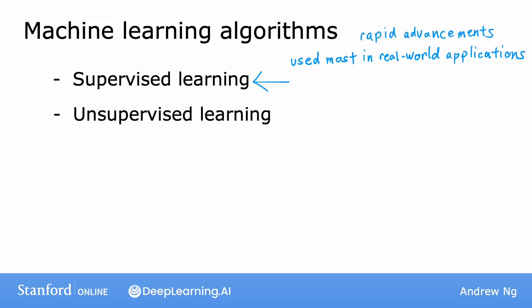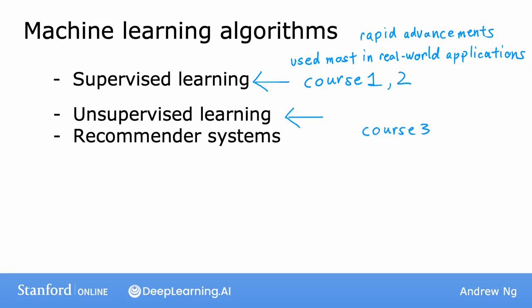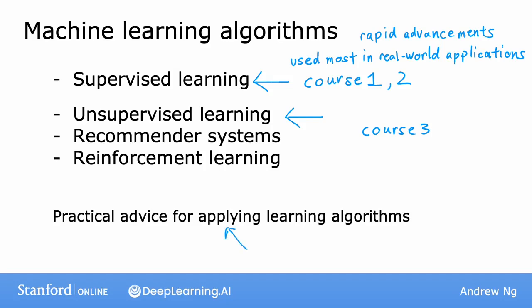In this specialization, which has three courses in total, the first and second courses will focus on supervised learning and the third will focus on unsupervised learning, recommender systems, and reinforcement learning. By far, the most used types of learning algorithms today are supervised learning, unsupervised learning, and recommender systems. We're also going to spend a lot of time on practical advice for applying learning algorithms.